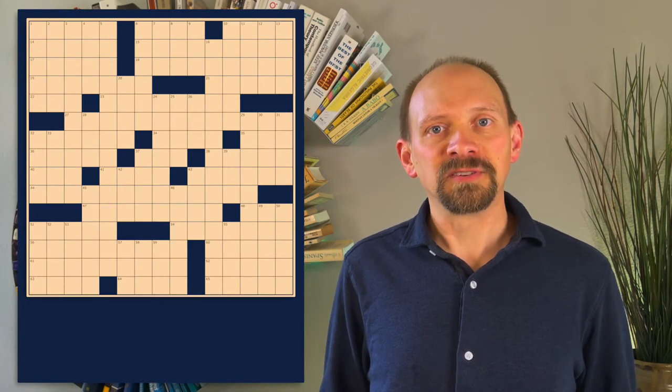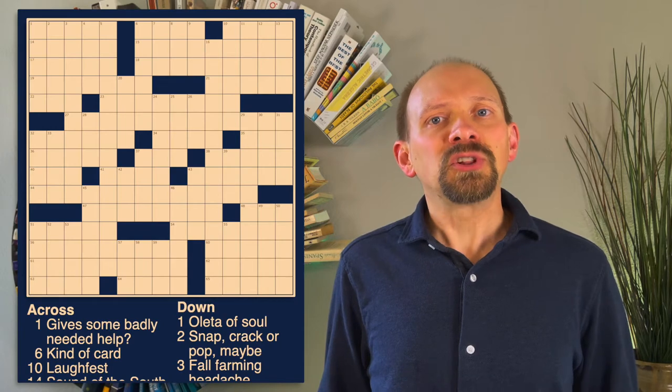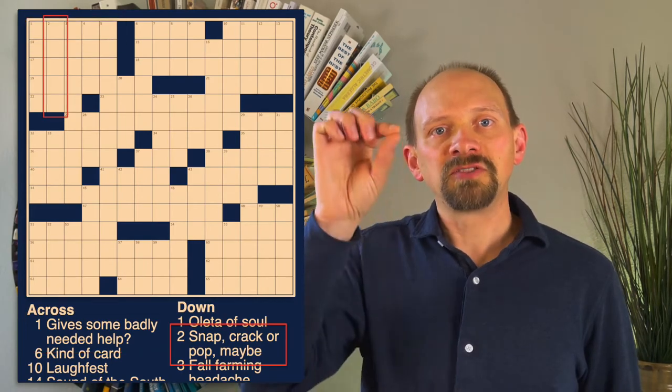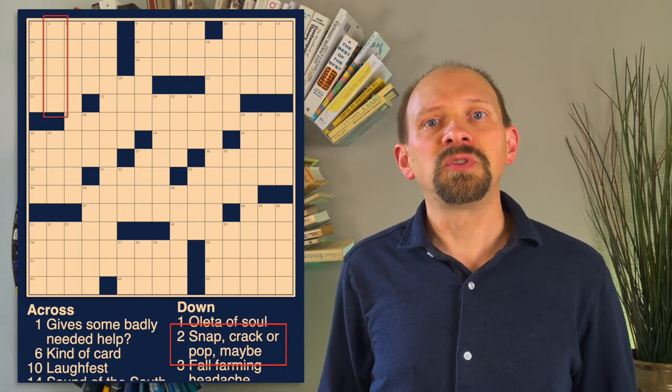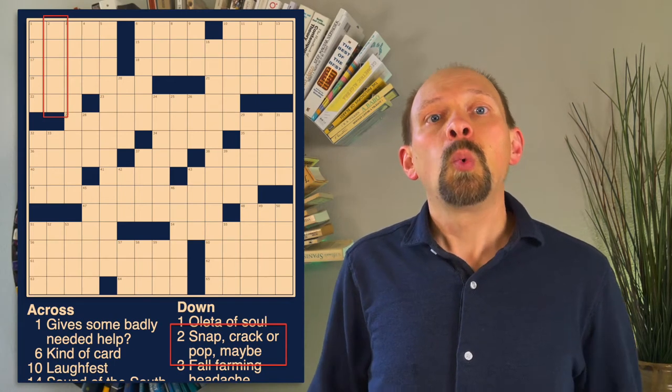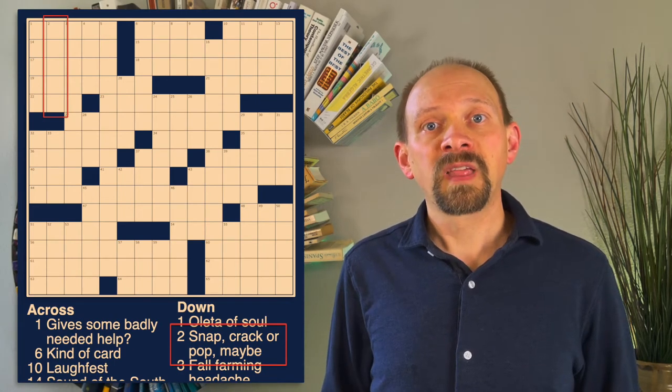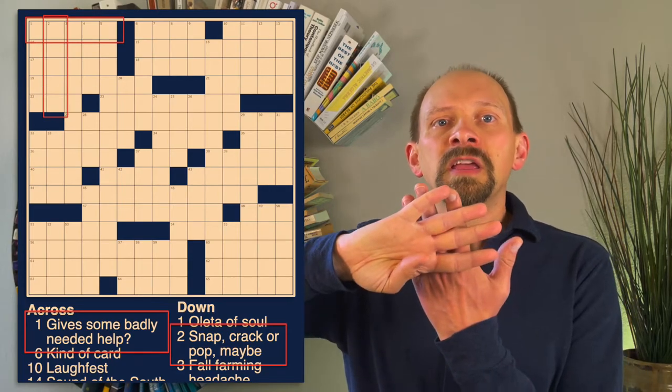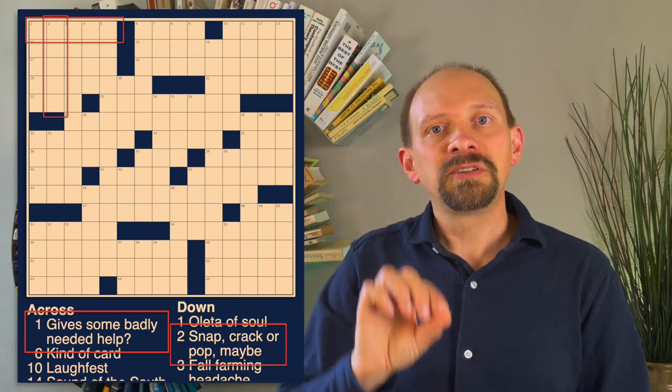An American Crossword Puzzle is a grid of squares together with a set of written clues. Each clue corresponds to a left to right or up and down stretch of blank squares that must be filled with the answers to the clues, one letter per square. The clue answers interlock so that each square is part of the answer for two different clues.